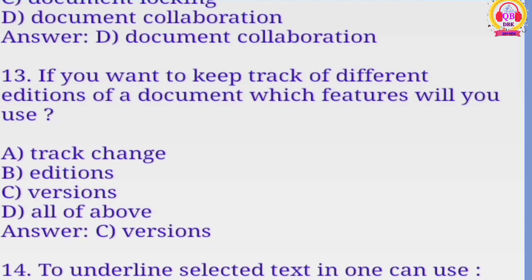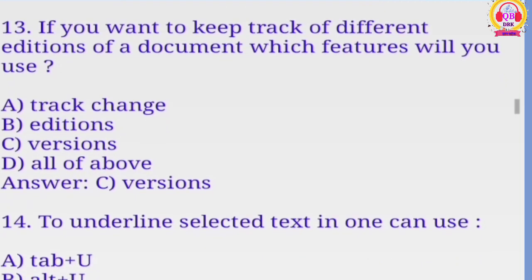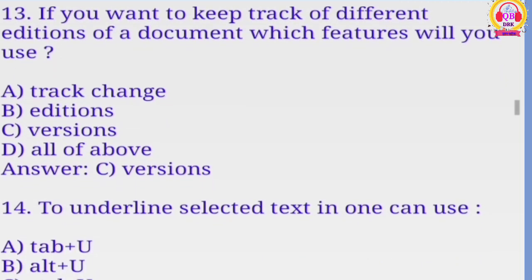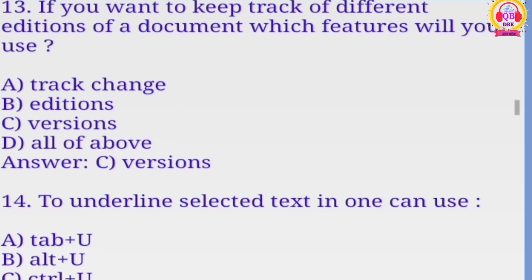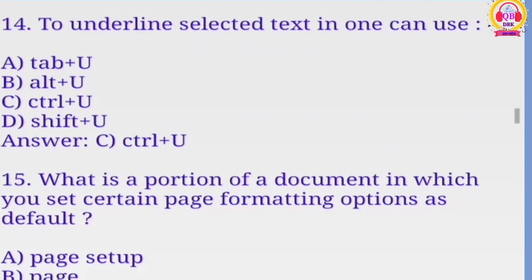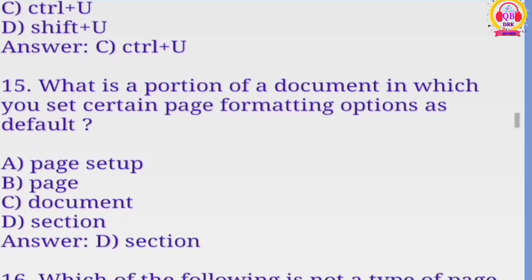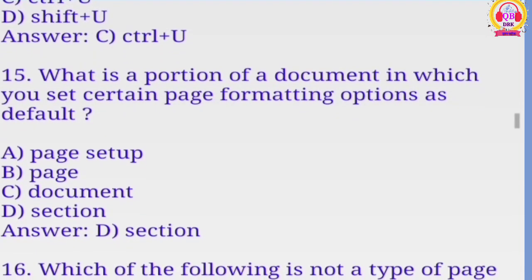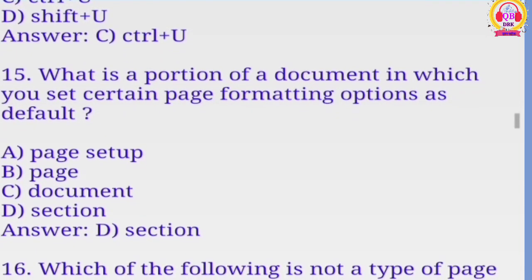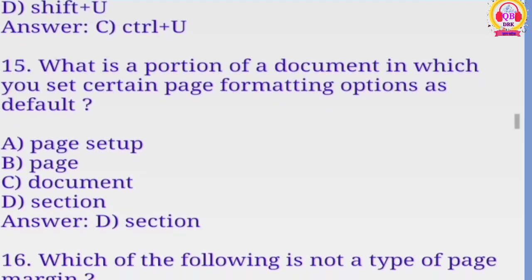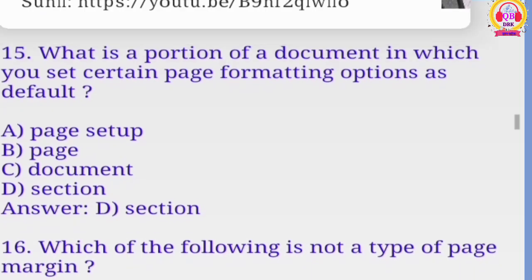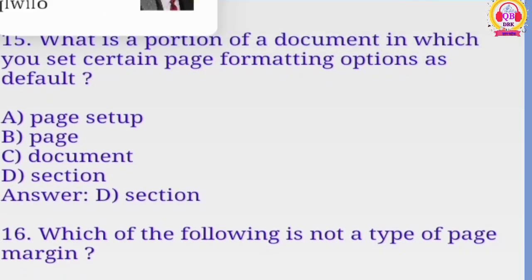To underline selected text one can use ABCD. Correct option is C, CTRL plus U. What is the portion of a document in which you set certain page formatting? ABCD, correct option section.